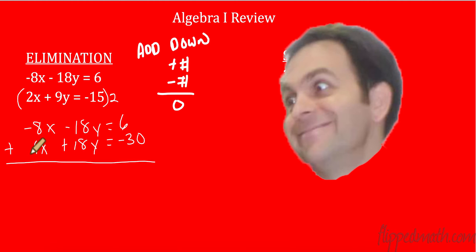Negative 8, 4, that is a negative 4x. I just combined like terms. Negative 18y and positive 18y, that is eliminated. You shall be eliminated. 6 plus negative 30 is negative 24. Divide both sides by negative 4 and we get x is 6. Very nicely done, right? Very nicely done indeed.